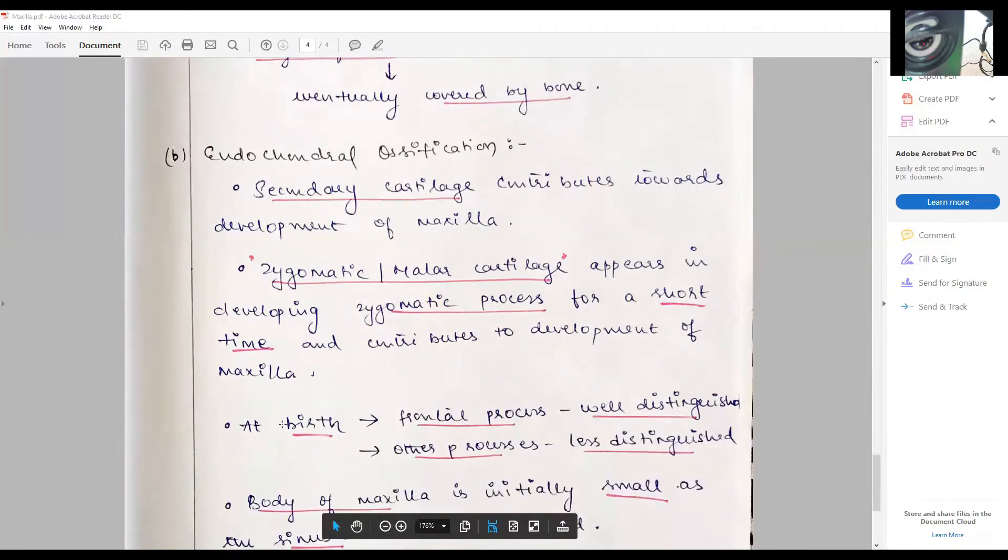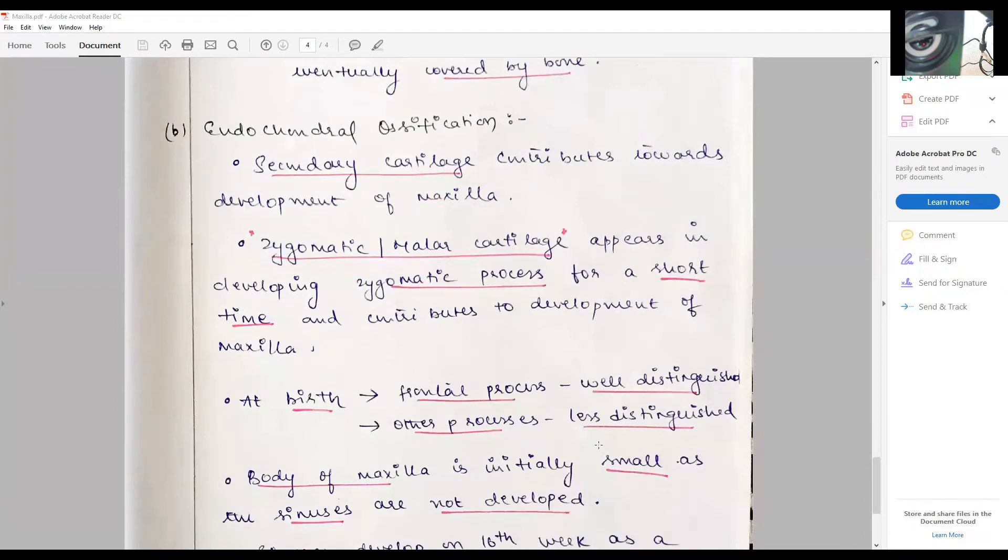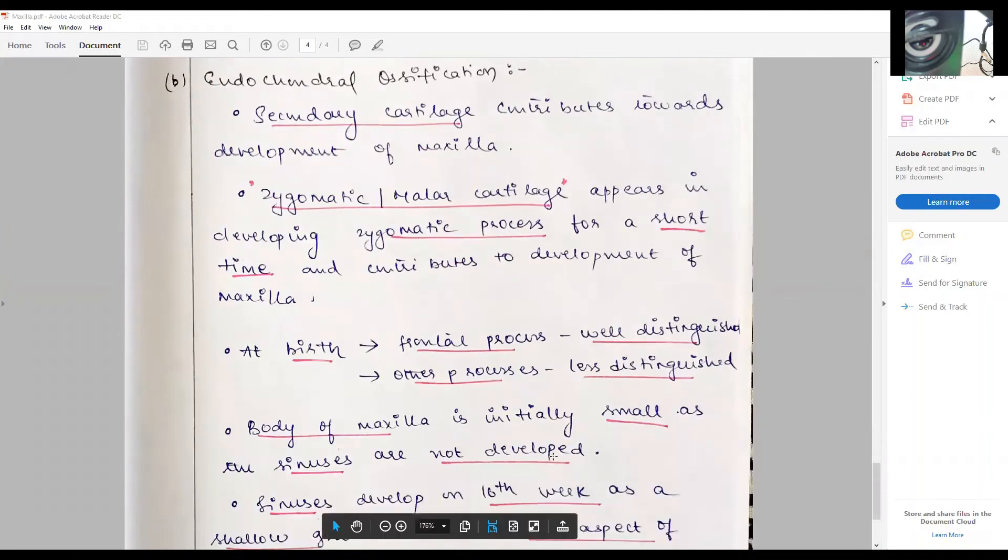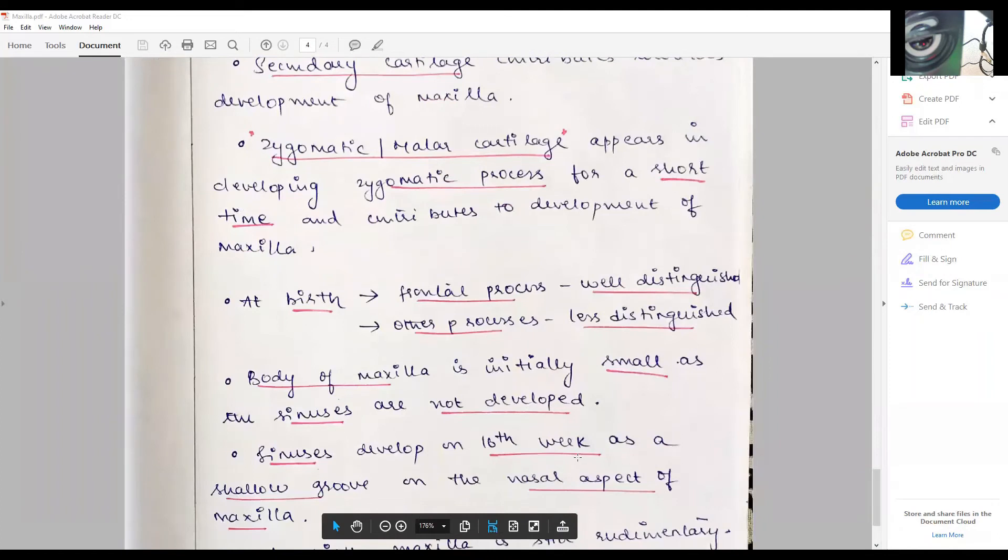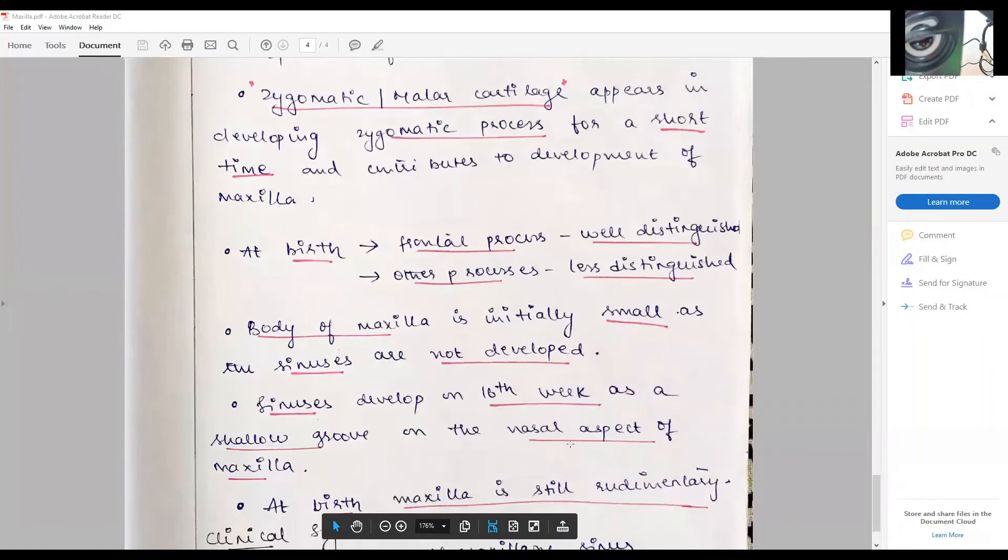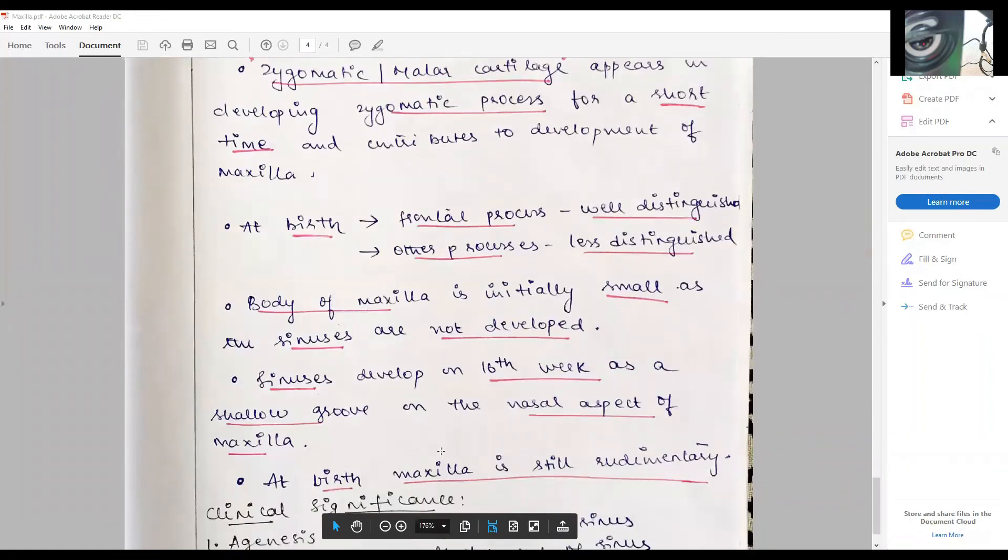At around birth, the frontal process is well distinct while other processes are less distinguished. That is the reason why the baby's upper jaw is not so prominent. The body of the maxilla is not well developed at this point of time because the sinuses are not well developed, and though the sinuses start to develop by the 16th week as a small cellular growth in the nasal aspect of maxilla.